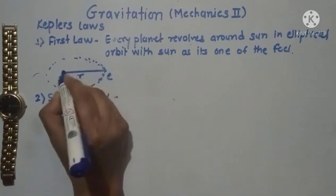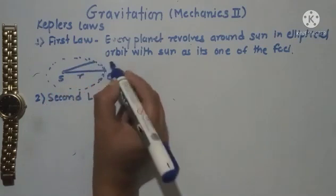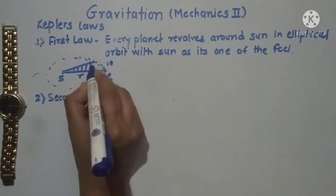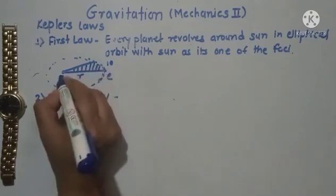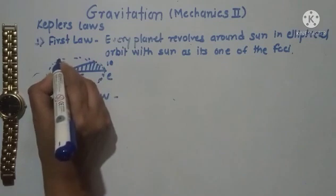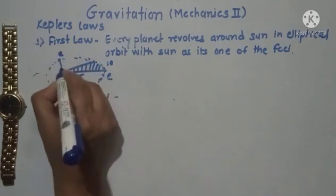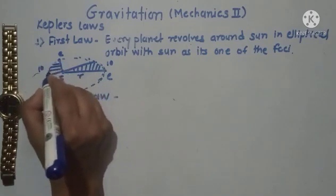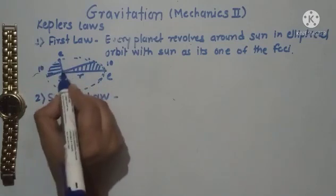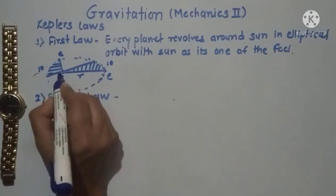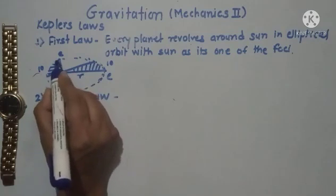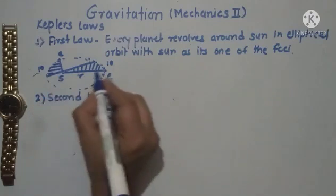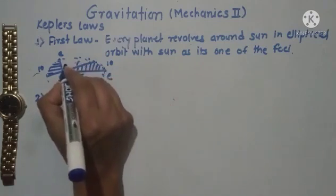This is called the radius vector r. Now suppose in a time of, say, 10 minutes, the area swept by this radius vector will be a certain region as the Earth moves from one position to another. In another equal time interval — also 10 minutes — the same area is swept by the radius vector, even though the distances covered may be different.